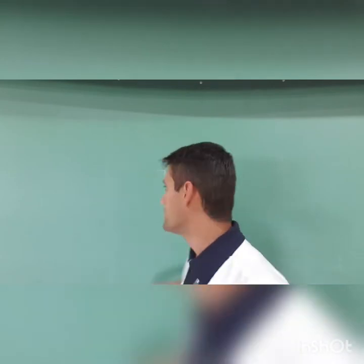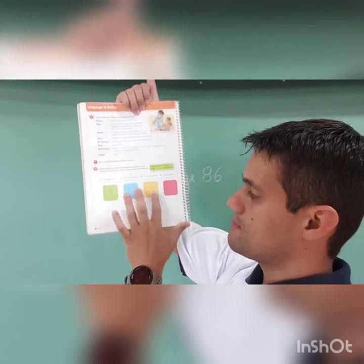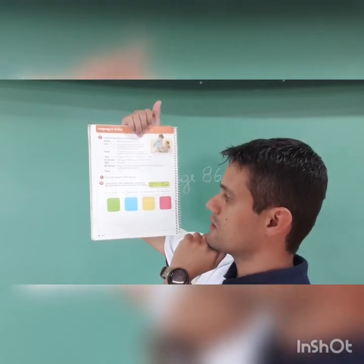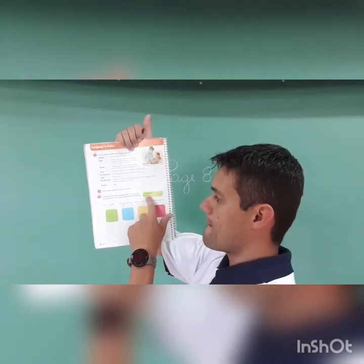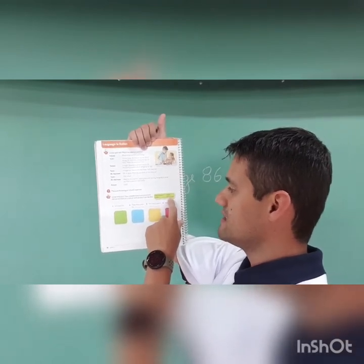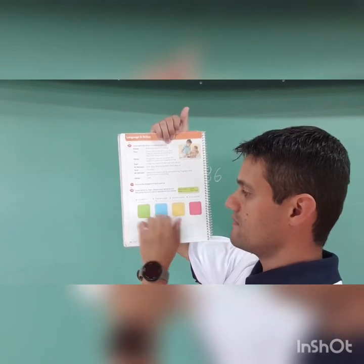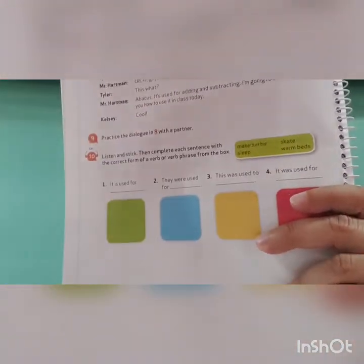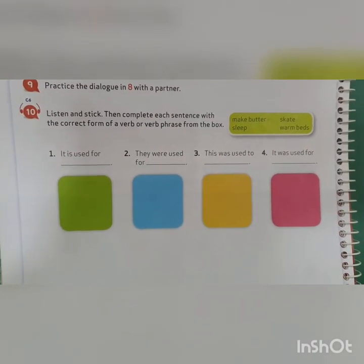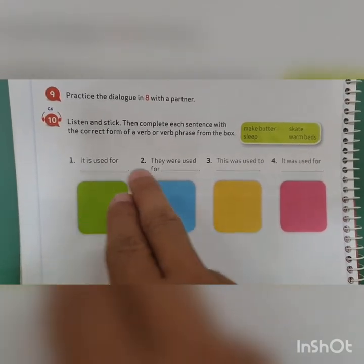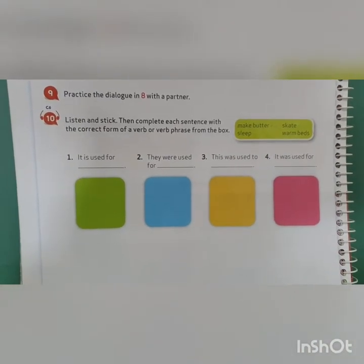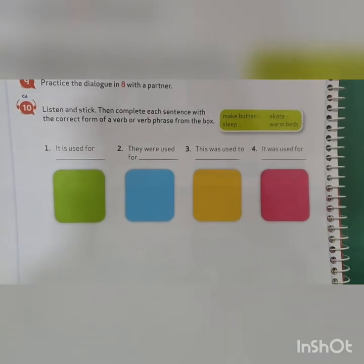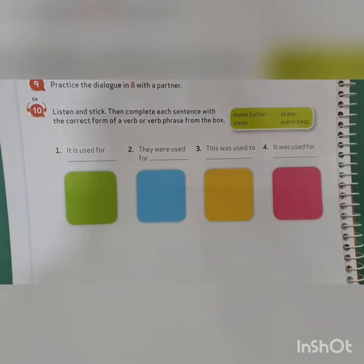Now, same page — page 86 — you are going to do this part here. Listen and stick, then complete each sentence with the correct form of a verb or verb phrase from the box. We have: make butter, sleep, skate, and warm beds. The options are: it's used for, they were used for, this was used to, and it was used for. The teacher is going to play the CD. You listen and complete the spaces using one of these words. Unit 7, page 86, Activity 10 — listen and stick, then complete each sentence with the correct form of a verb or verb phrase from the box.